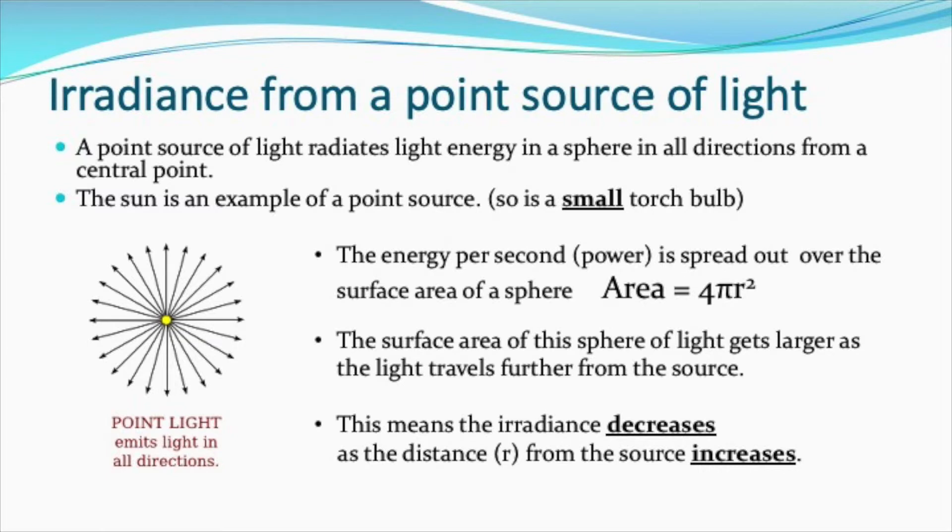The energy per second that's given out is spread over the surface area of a sphere. Surface area of a sphere is 4πr²—that's one of the additional maths relationships at the back of your relationship sheet. As the light travels further from that point source, that light spreads into an ever-increasing sphere of light.